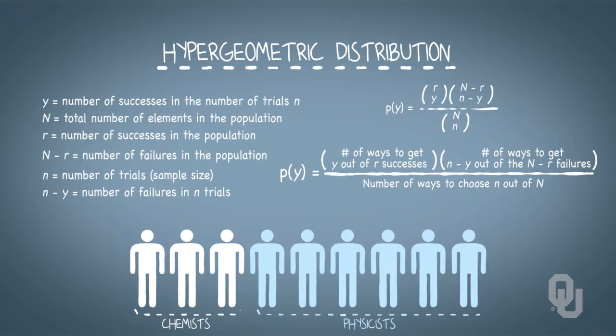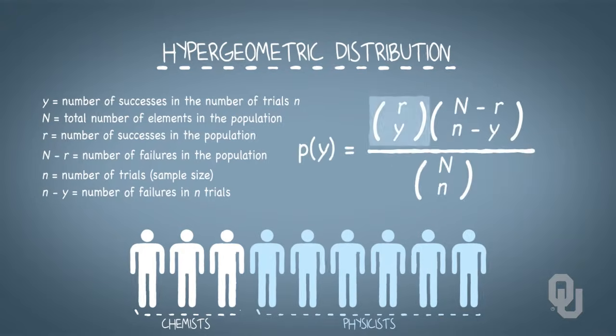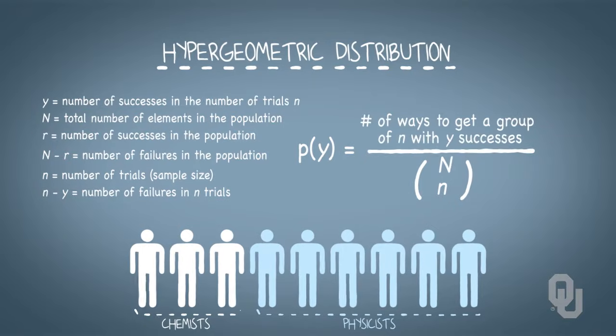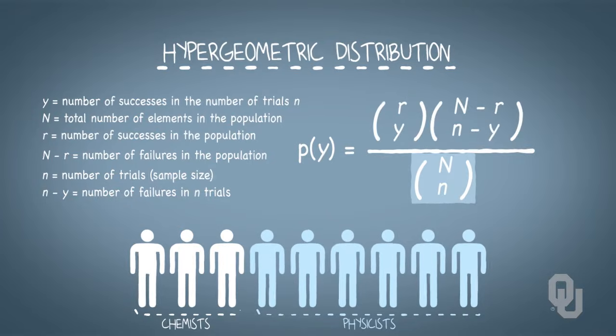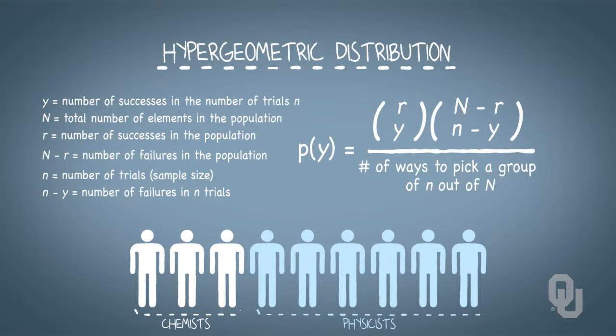We use combinations to find this probability. R choose y times capital N minus R choose little n minus y in the numerator. This gives us the number of ways to get a group of n with y successes. Then, capital N choose little n, the number of ways to pick a group of n out of capital N in the denominator.